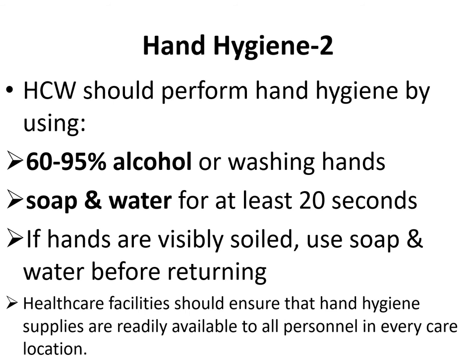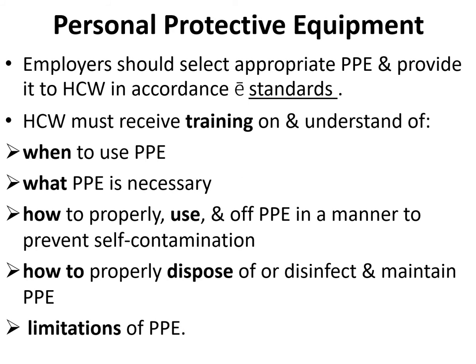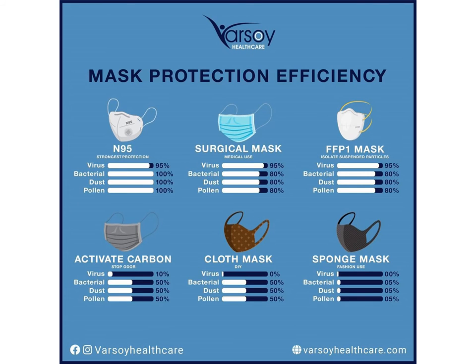Healthcare workers should perform hand hygiene before and after all patient contact, contact with potentially infectious material, and before putting on and after removing personal protective equipment including gloves. Hand hygiene after removing PPE is particularly important to remove any pathogens transferred to bare hands. Use 60–95% alcohol or wash hands with soap and water for at least 20 seconds; if hands are visibly soiled, use soap and water.